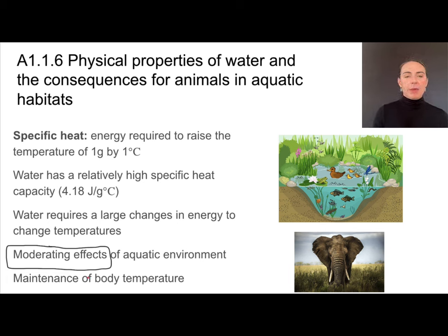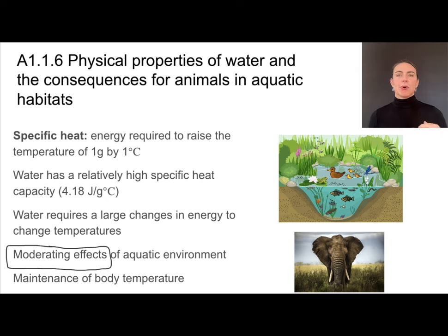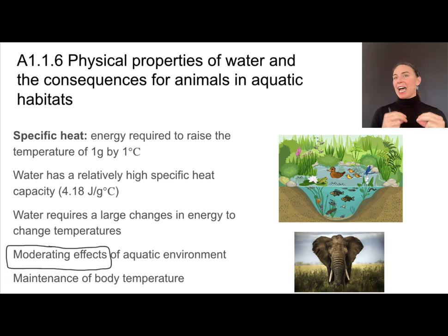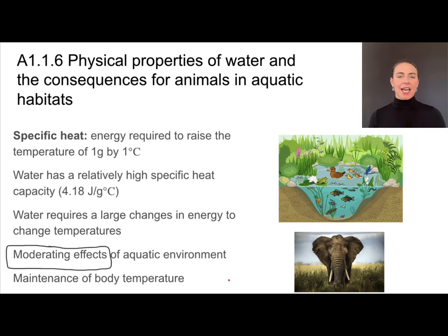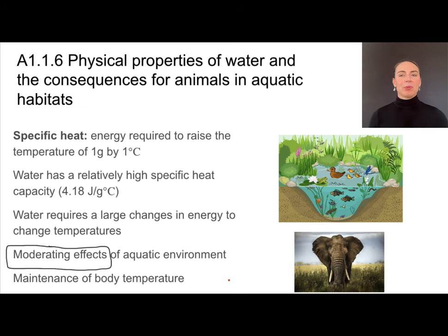High specific heat capacity can also be great for the maintenance of body temperature. Cells can produce a lot of heat through metabolic reactions, and that heat energy can enter the watery parts of your cells — the cytoplasm — or the water-based fluid in your blood plasma — without changing temperature very much. For example, the African elephant has really big ears to expose them and the blood inside them to outside air. Water is a good thermal conductor and can exchange heat with the environment, but the blood plasma itself won't change temperatures drastically.